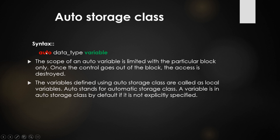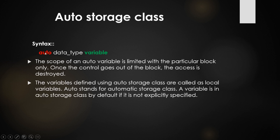Auto storage class — the syntax uses the auto keyword, followed by the data type and variable name. Auto variables are limited within a particular block only. Once the control goes out of the block, the variable is destroyed — meaning the memory allocated for the variable in the RAM stack is freed. Auto variables are local variables. By default, if you don't have the auto keyword and only have a data type, it will be treated as auto.